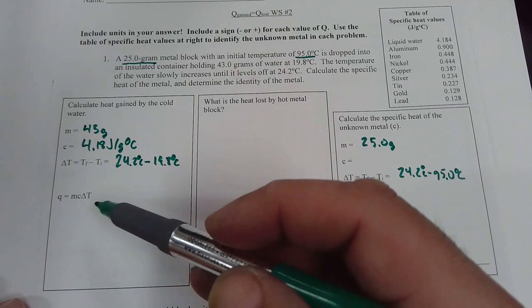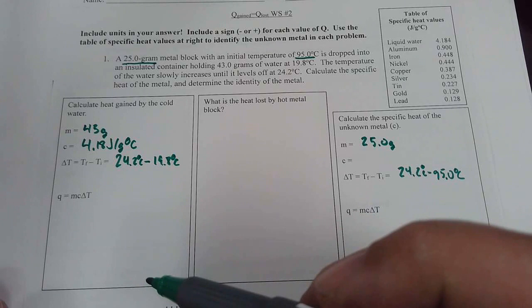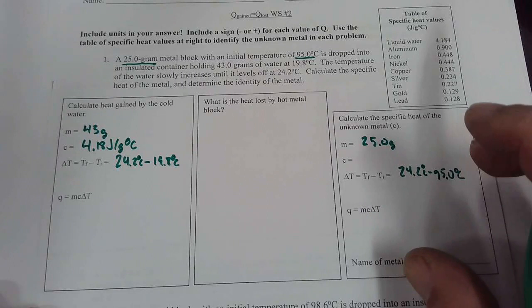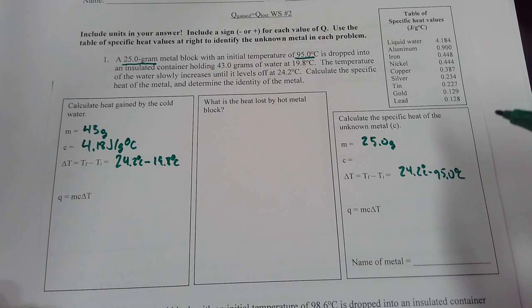But if we remember that the Q of the reaction is the negative Q of the surrounding, once I find the Q of the water, the opposite sign of that Q will be the Q for the metal. And then I will only be missing one variable. I'll be able to find the specific heat and as such I will be able to find out what type of metal it is.